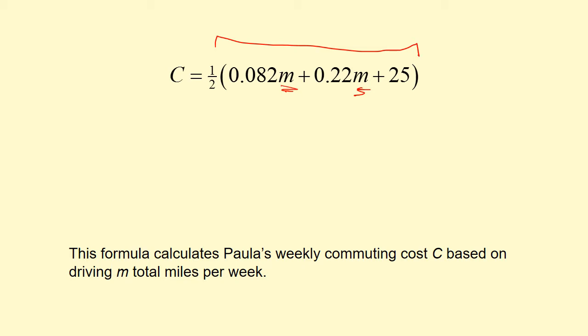Inside the formula, 0.082M represents the cost per mile and maintenance costs. We dealt with that back in section 3.2, when we were looking at Paula considering renting a car — maintenance costs are part of an expense whenever you drive your car, even if you don't spend the money right away. Every mile, you're also burning gas, and that's what the 22 cents a mile represents. The $25 is the weekly parking cost at her school.